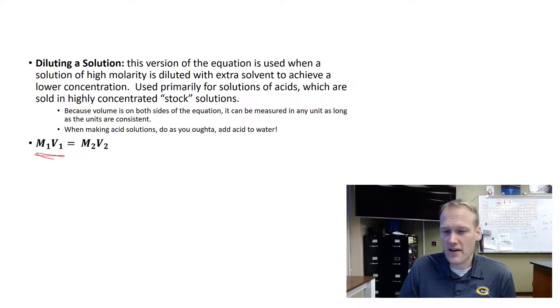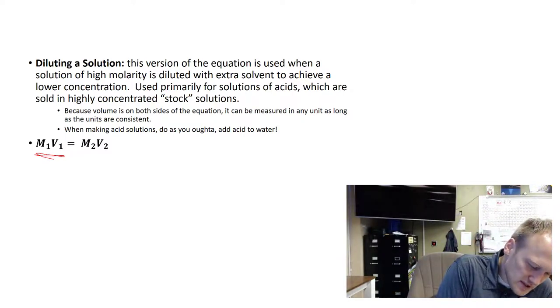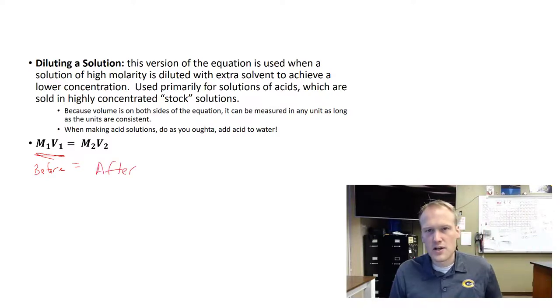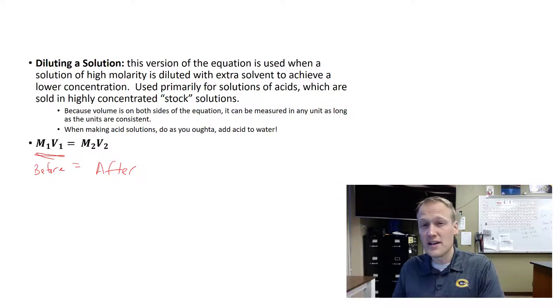Think of this equation as a before and after. So what we do is we take the molarity and the volume before and then we're going to compare it to the molarity and the volume after. So if I know what molarity I'm trying to get to, this equation will tell me the volume of the acid I should have at the end.